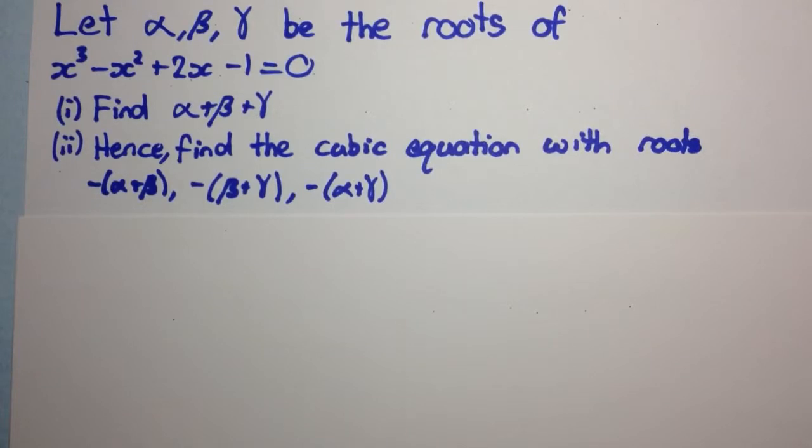Part 1, find alpha plus beta plus gamma. And part 2, hence find the cubic equation with roots minus 1 into alpha plus beta, minus 1 into beta plus gamma, and minus 1 into alpha plus gamma.